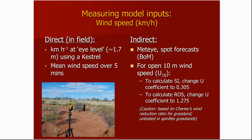Turning now to measuring the model inputs. The most important input, as with all fire behaviour models, is wind speed — once you've got ignition and spread. We found that wind speed explained around 70 to 75% of the rate of spread, so it's a major factor. Measuring wind speed in the field, you can use your kestrel at 1.7 metres or about eye level. We suggest getting an average wind speed over five minutes — you can program your kestrel to do that. We actually found MedEye and specific spot forecasts requested from the Bureau were pretty good, but as with all forecasting, trying to accurately forecast wind speed in particular is problematic — though that applies to most situations, not just the arid zone.